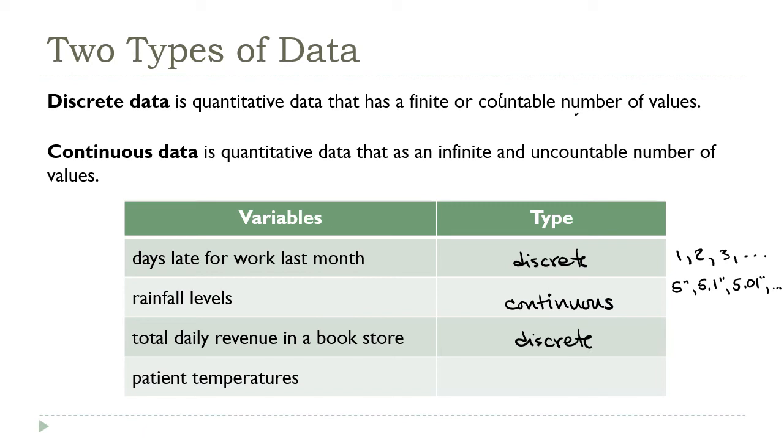Finally, patient temperatures, those are like rainfalls. 98.6, 98.61, 98.601, and so on. Those are all valid results, and there's no end to how far out you can push the decimal. So this is a continuous variable.